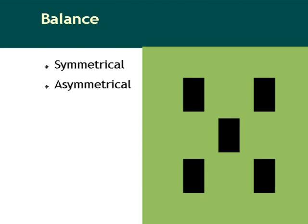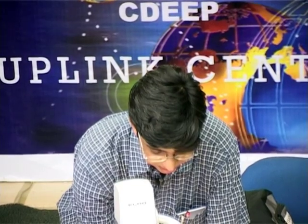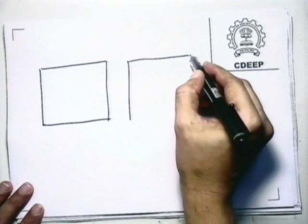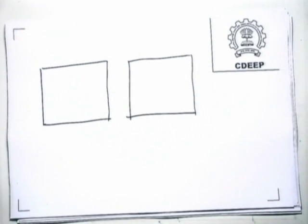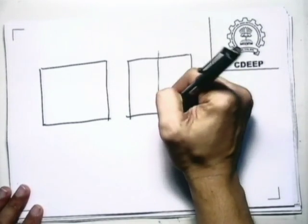Going with balance first — balance is a principle used to explain or present a particular idea in a given field. Balance can be achieved in two ways: symmetrical and asymmetrical. The example shown was symmetrical — if you draw a line in the center you will have exactly similar things on both sides. This is the most typical design format, very commonly used, because it will work for any requirement.